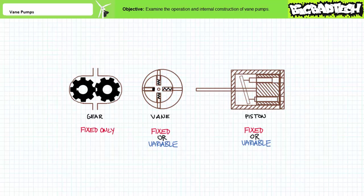Recall that three types of positive displacement pumps are commonly employed in hydraulic systems: gear pumps, vane pumps, and piston pumps. Regardless of their type, pumps can be classified as fixed or variable displacement pumps. A fixed displacement pump, as the name implies, is incapable of varying displacement per revolution. A variable displacement pump, in contrast, uses movable internal components to selectively increase or decrease displacement per revolution as required.